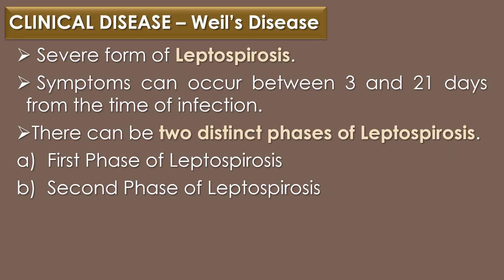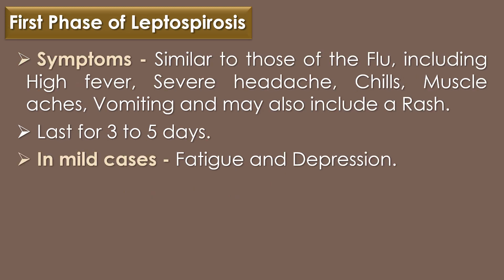Clinical disease: Weil's disease is the clinical disease caused by Leptospira introgons. Weil's disease is a severe form of Leptospirosis, and symptoms can occur between 3 and 21 days from the time of infection. There can be two distinct phases of Leptospirosis. In the first phase, symptoms are similar to those of the flu, including high fever, severe headache, chills, muscle aches, vomiting, and may also include a rash.